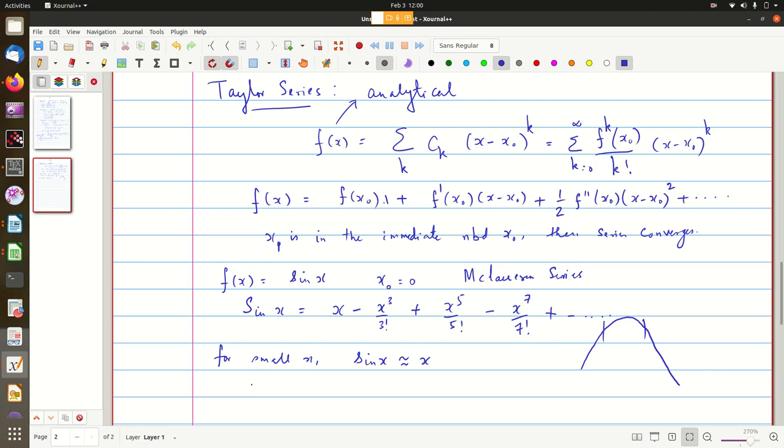So, if you choose x equal to pi by 2, pi by 2 is not very close to 0. So, that will give you, sin pi by 2 is 1. So, if you substitute pi by 2 here, what do I get? sin pi by 2 is 1, and on the other side, you have pi by 2, which is 3.14 by 2, which is 1.7. So, it is not at all close. So, you might have to then subtract pi by 2 whole cube by 3 factorial, and then, maybe, you have to add more terms.